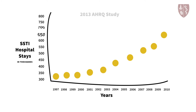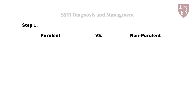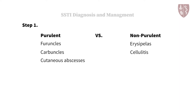According to the 2014 Infectious Diseases Society of America guidelines, the first step in diagnosing and managing skin and soft tissue infections is determining if the process is purulent or non-purulent. Purulent SSTIs include furuncles or boils, carbuncles, and cutaneous abscesses. Non-purulent skin and soft tissue infections include erysipelas, cellulitis, and necrotizing fasciitis. This clinical distinction is critical as the management of both groups of infections differs.